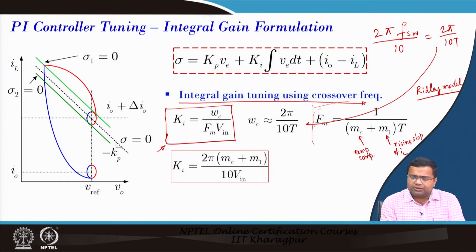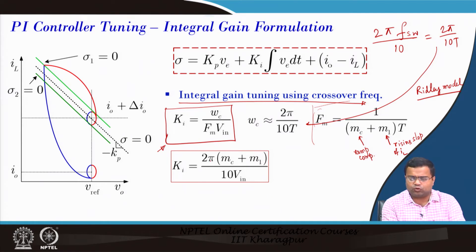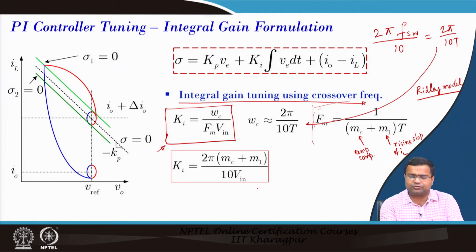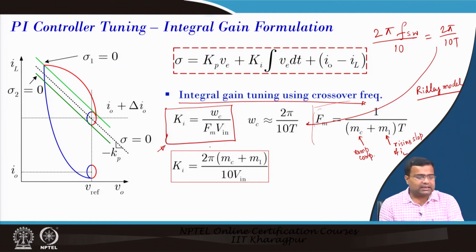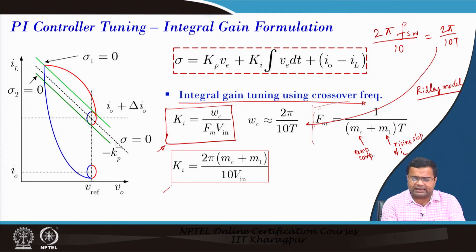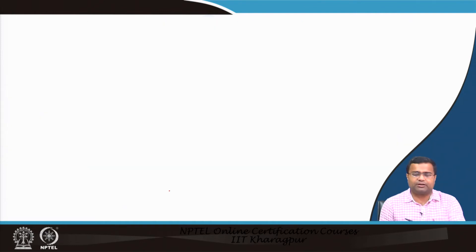Substituting these expressions, Ki can be written as 2π(mc + m1) divided by (10 · Vin), allowing us to obtain the integral gain from the small-signal model.